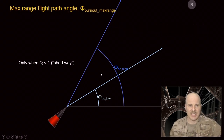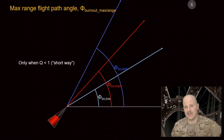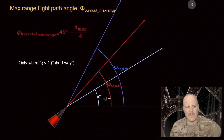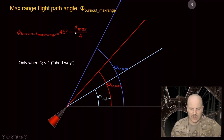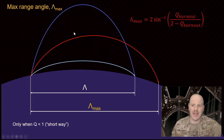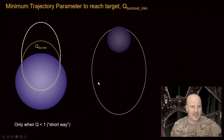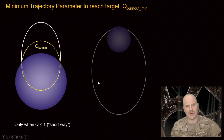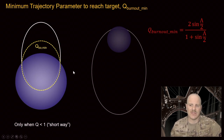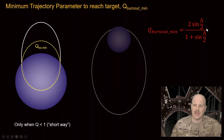We can also find the max range flight path angle, which might be useful if we're trying to find the furthest target we can hit from a particular launch site. There's a max range equation related to our range angle. We can also calculate our max range angle — to do that, you need to know what our rocket power is, specifically Q burnout. That allows us to know the maximum range angle we can hit. And we have our minimum trajectory parameter to reach a particular target — in other words, what's the smallest rocket that can get us there. There's an equation for that related to range angle.